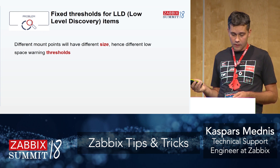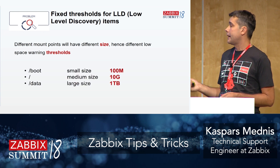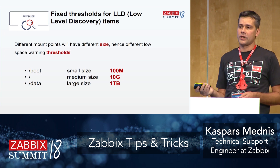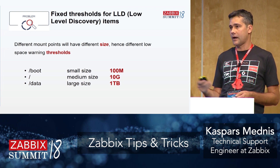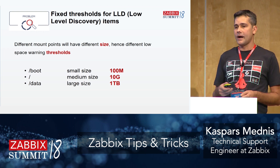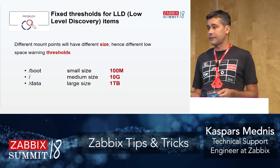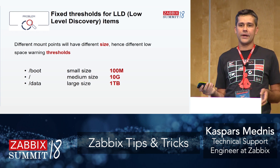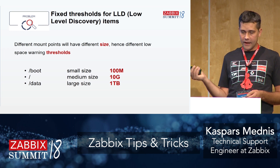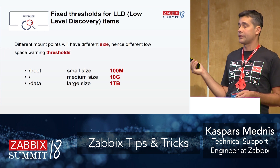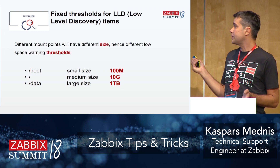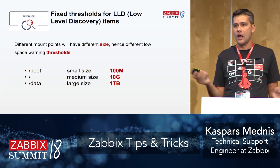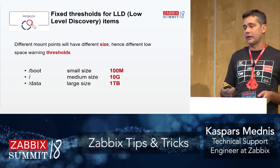Let's move to disk space. The common problem is that with low-level discovery we can discover all disks and create item prototypes and trigger prototypes. But different mount points will have different sizes. With the same triggers, even using simple user macros, you will end up receiving false alerts — because boot is really small, then you have some medium-sized partition, and maybe a terabyte partition for data. You cannot use the same warning levels.